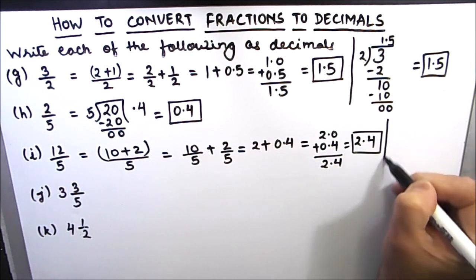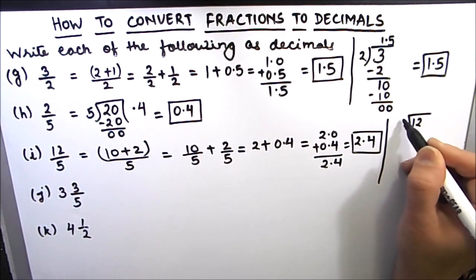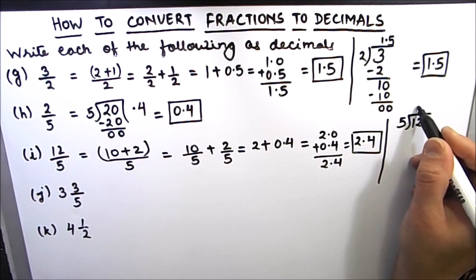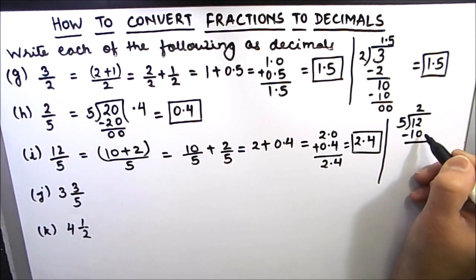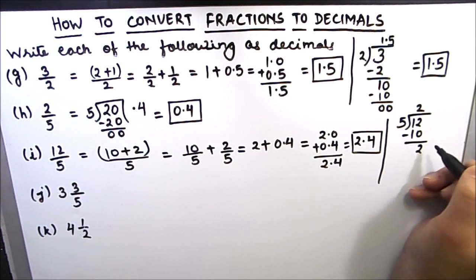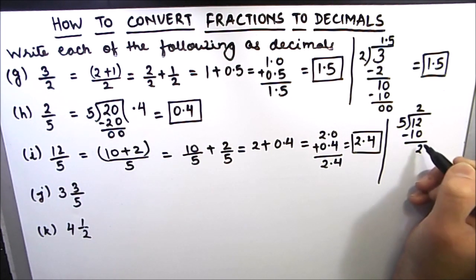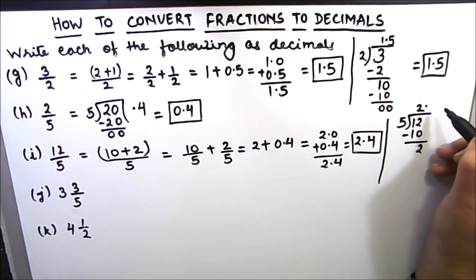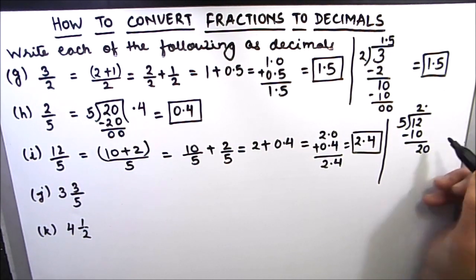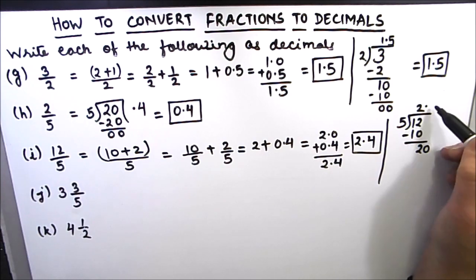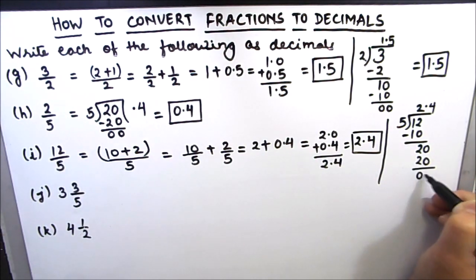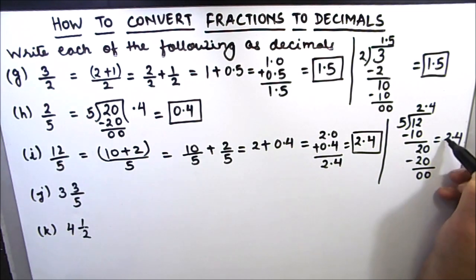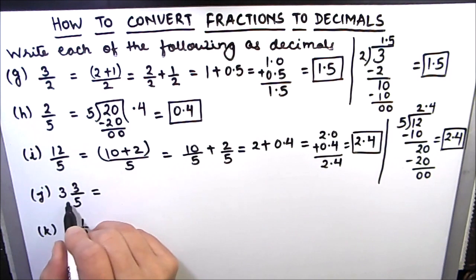The other method is direct division by 5. So 5 times 2 is 10. Then 2 will be the remainder. 2 cannot be divided by 5, so we will put a decimal point and a 0. 20 can be easily divided by 5. 5 times 4 is 20, and the remainder is 0. So our final answer is 2.4. The next one is a mixed fraction.